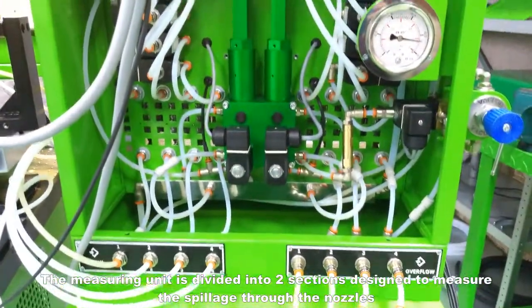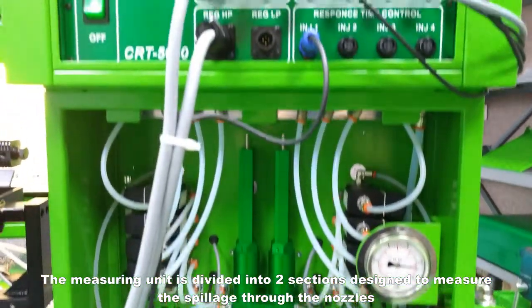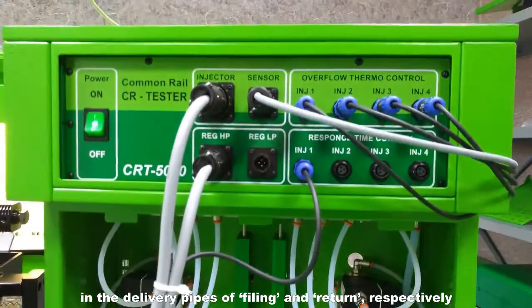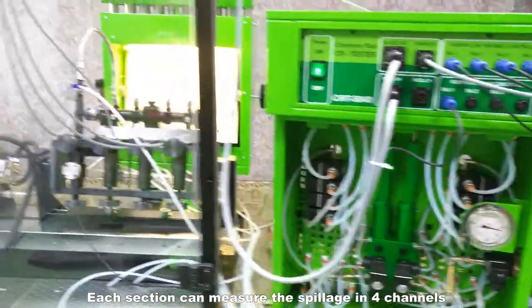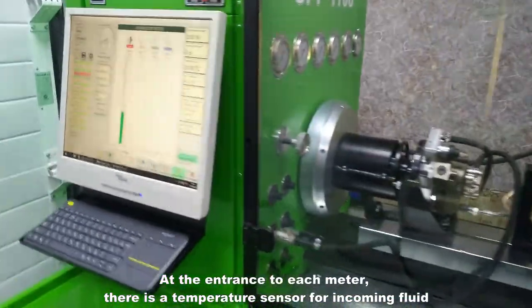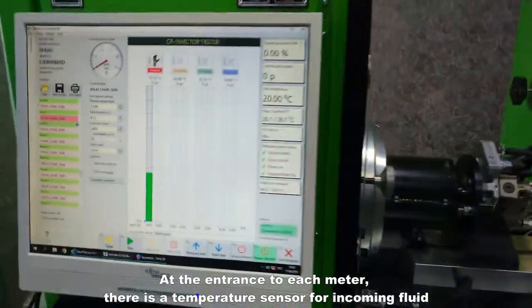The measuring unit is divided into two sections, designed to measure the spillage through the nozzles in the delivery pipes of filling and return respectively. Each section can measure the spillage in four channels. At the entrance to each meter, there is a temperature sensor for incoming fluid.